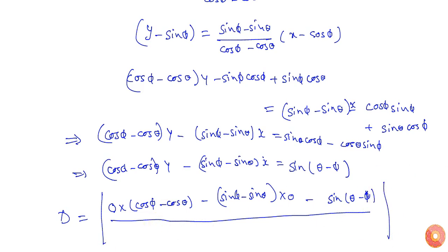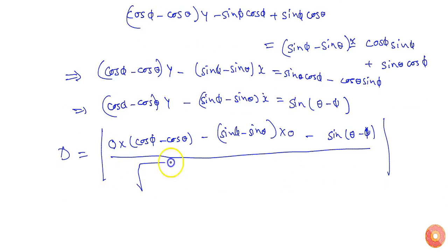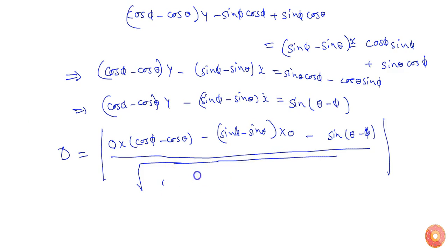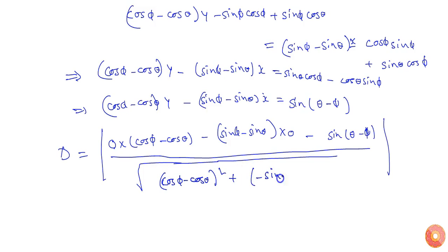The square root of a squared plus b squared will be the square root of (cos phi minus cos theta) squared plus (minus sin phi minus sin theta) squared — sorry, (sin phi minus sin theta) all squared.